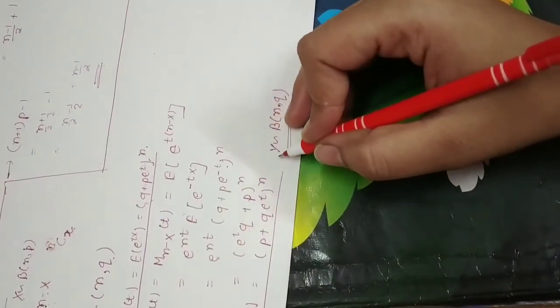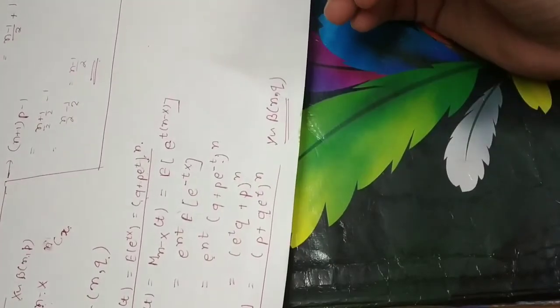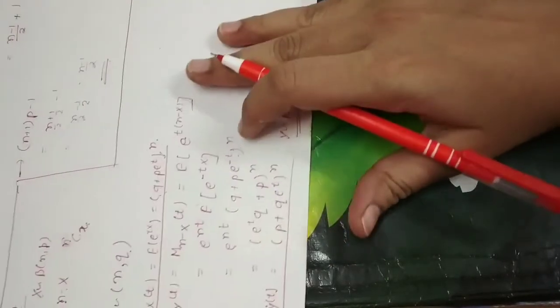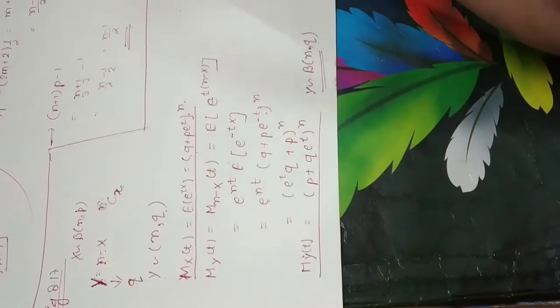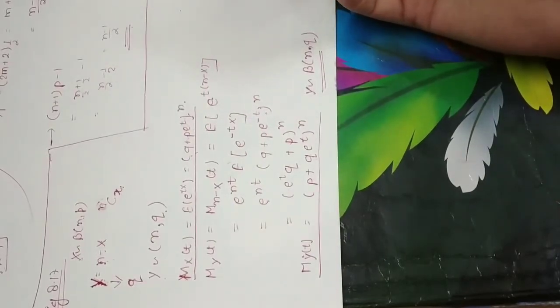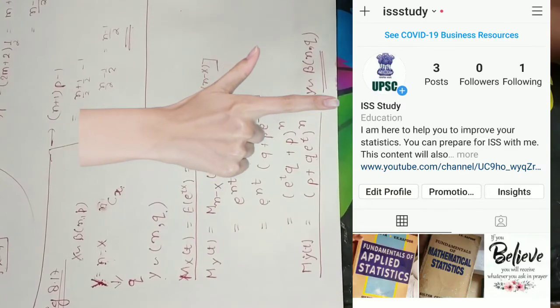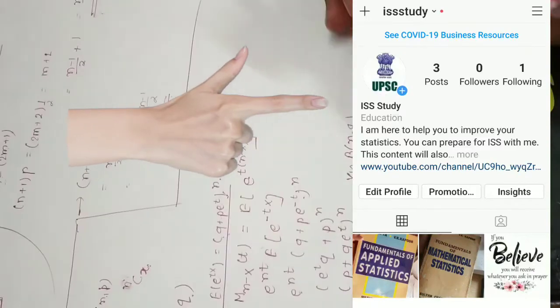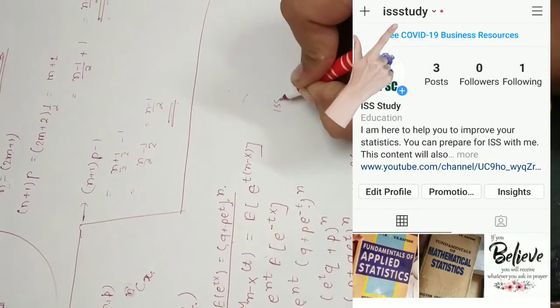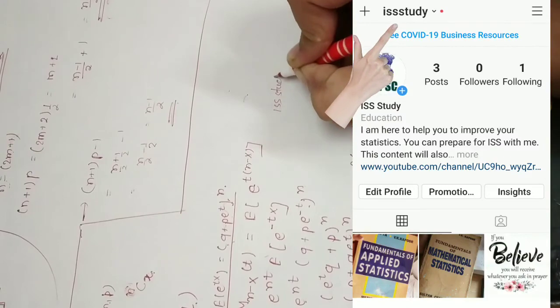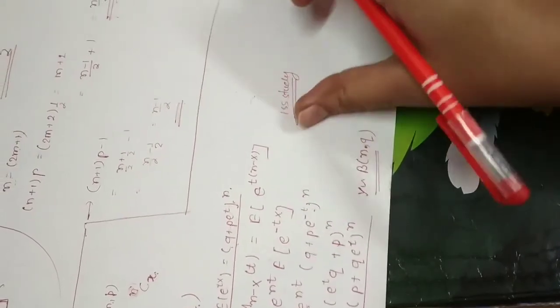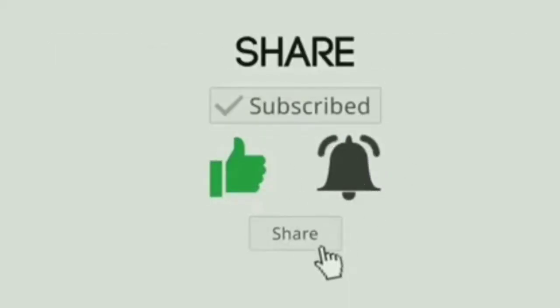And this is your second method. So I hope this question will come to you very well. As I told you, I created an Instagram account, so I will send a lot of tricks and formulas. So if you want to follow me, you can follow me on Instagram. My name is issstudy, so when you search this my account will show you. So you can follow me there. Thank you for watching my video, have a nice day.